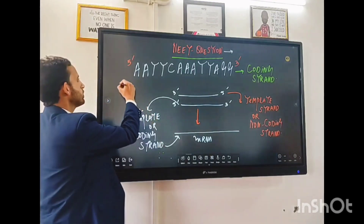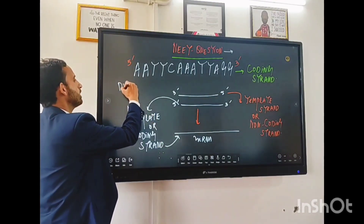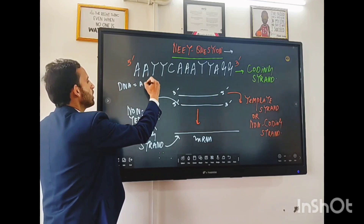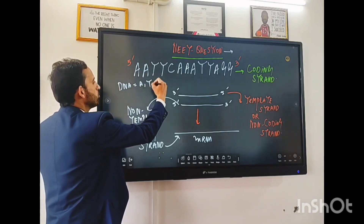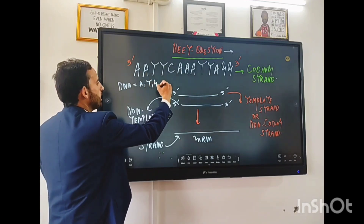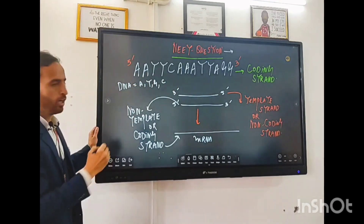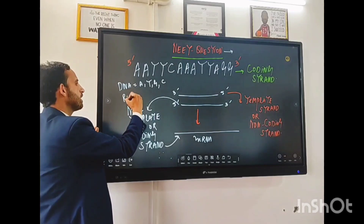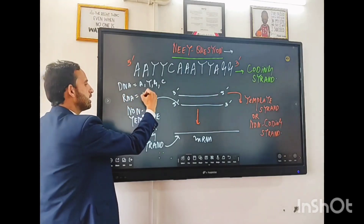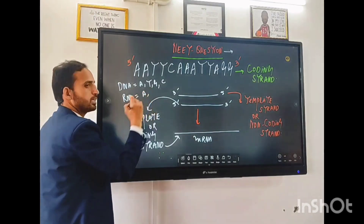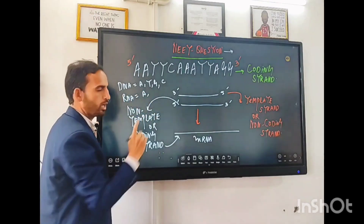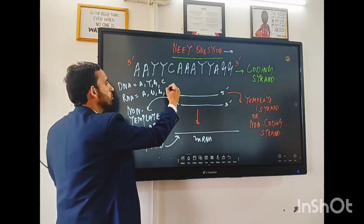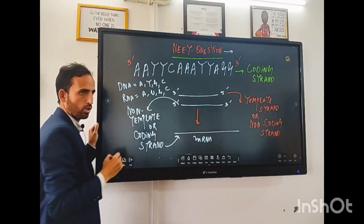If you look at your DNA, you should keep this in mind. In DNA, we have adenine, thymine, guanine, and cytosine. If we look at RNA, you will have adenine — but thymine will not be there. Instead of thymine, you will have uracil, guanine, and cytosine.